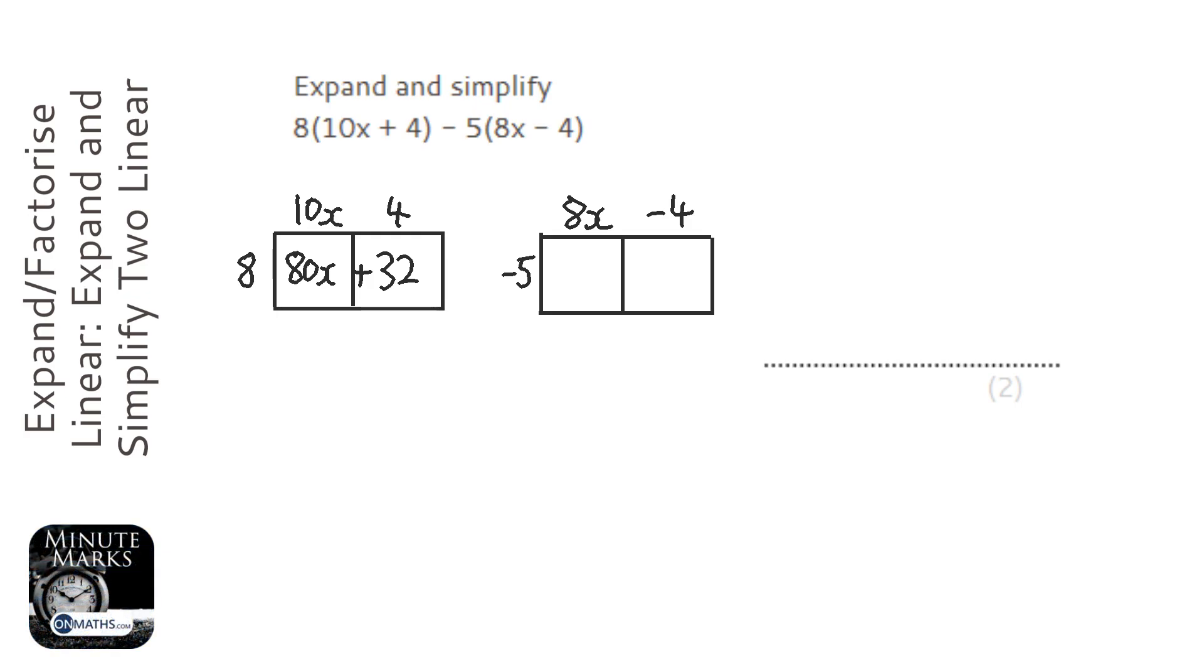Okay, minus 5 times 8x—so minus 5 times 8, well it's a negative times positive so it's gonna be negative. 5 times 8 is 40, and then we've got the x there. Now a minus times a minus is a positive, so it's positive 20.